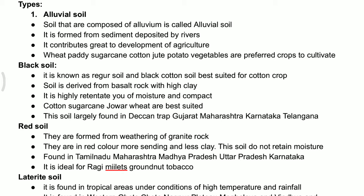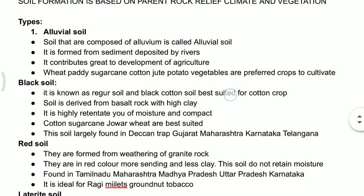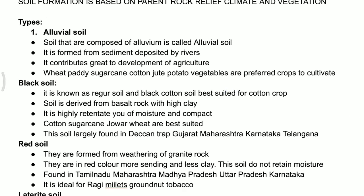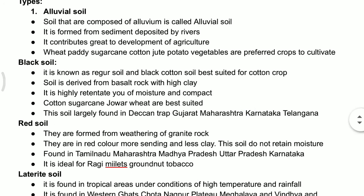The best suited crops which can be cultivated in alluvial soil are wheat, paddy, sugarcane, cotton, jute, and many more types of vegetables. For each soil we have to keep in mind how that soil is created, where that particular soil is concentrated in India, and which crops are preferred to cultivate.